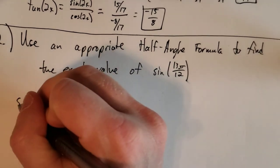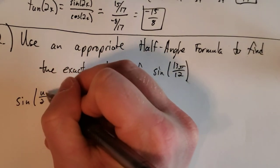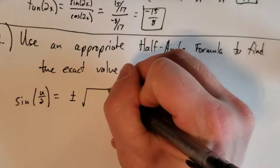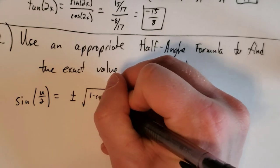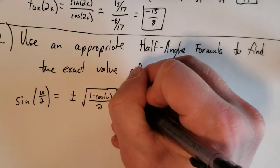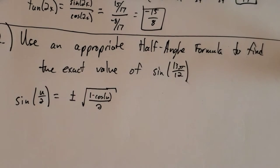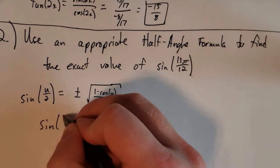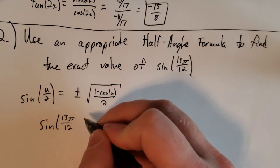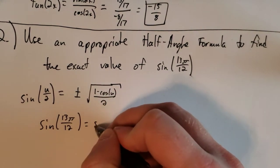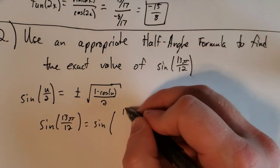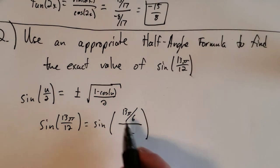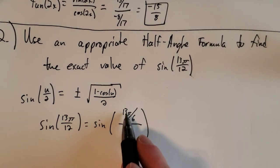So to do that, first off, let's write out a half-angle formula. And that is sine of u over 2 is equal to plus or minus the square root of 1 minus cosine of u all over 2. So to find sine of 13 pi over 12, we're going to use that formula. So I'm going to write out sine of 13 pi over 12 is the same as sine of 13 pi over 6 divided by 2. 13 pi over 6 divided by 2 is just the same as 13 pi over 12.